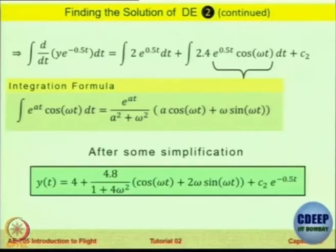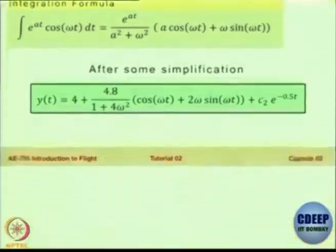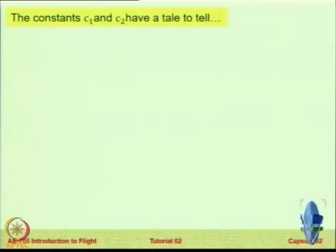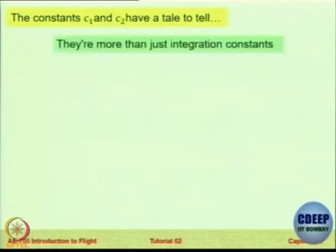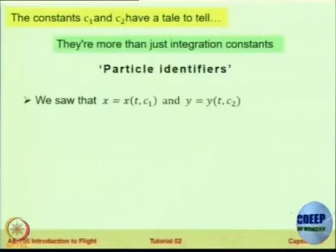These two constants C1 and C2 are not just constants of integration for the mathematician. For the fluid mechanics perspective, these two coefficients are particle identifiers. By changing their values, you can actually track different particles — that is their physical significance. X is a function of t and C1; y is a function of t and C2 in the two expressions we have derived.